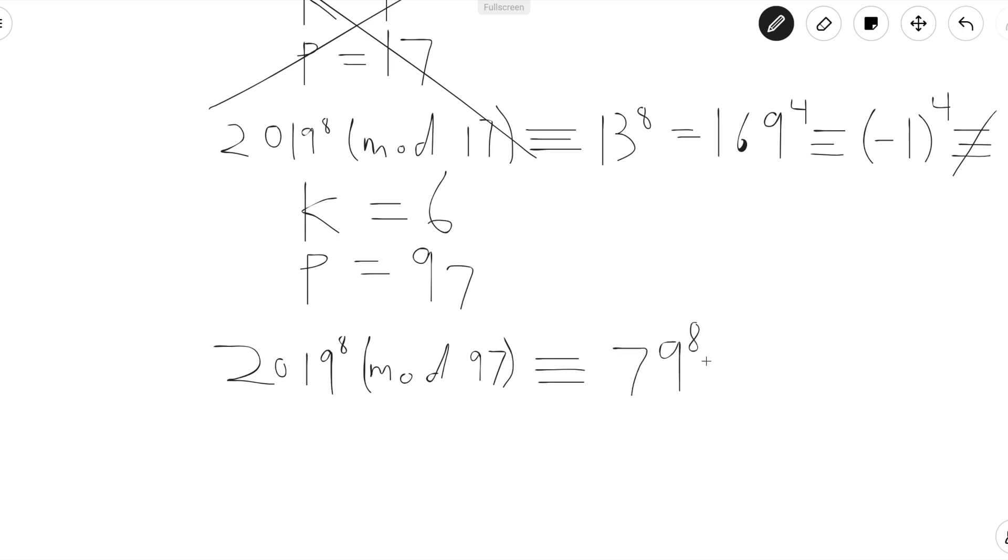And 79 is also congruent to negative 18. So we can write this as negative 18 to the 8, which equals negative 18 squared to the 4th, which is 324 to the 4th. And 324 is congruent to 33 mod 97. So this is just congruent to 33 to the 4th. And 33 to the 4th equals 33 squared squared, which is 1089 squared. And 1089 is congruent to 22 mod 97.